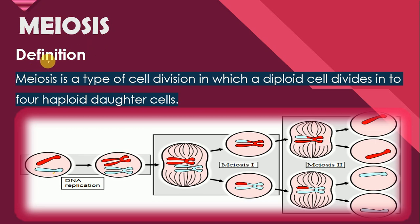Let's start with the definition of meiosis. Meiosis is a type of cell division in which a diploid cell divides into four haploid daughter cells. A single diploid parent cell divide hokar meiosis ke through four haploid daughter cells banata hai. These four haploid daughter cells parent cells se different hote hain — parent cell mein chromosome number diploid hai, means 2n hai, jabke daughter cells mein they are haploid, having just 1n chromosome number.